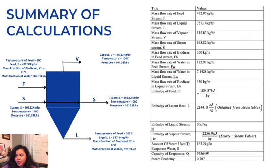I have summarized the values from our calculations, and these are the tabulated values. The values I would like to highlight in this section would be the mass flow rate of water in the feed stream and the mass flow rate of water in the liquid stream. As we can observe, the mass flow rate of water in the liquid stream, which is 7.1428 kilograms per hour, is much smaller than that of the feed stream. This can be concluded that there is a significant amount of water vaporized to achieve a purity of biodiesel, which is 98% mass fraction. I would also like to highlight the amount of steam used to evaporate the water, which is 163.2 kilograms per hour, and the capacity of the evaporator would be 97,564 watts. The steam economy is found to be 0.70.